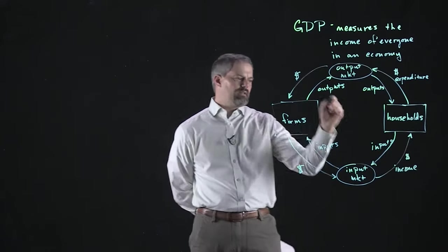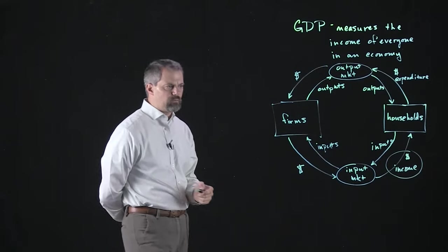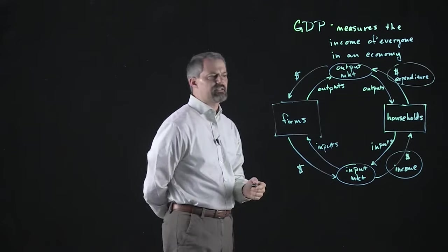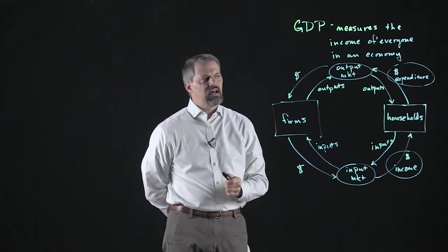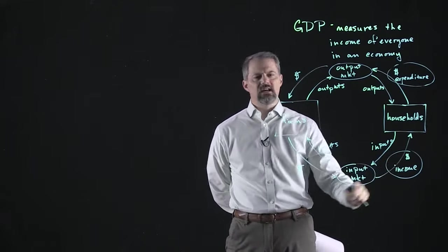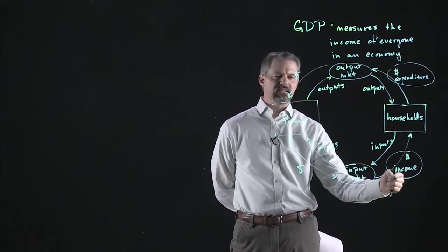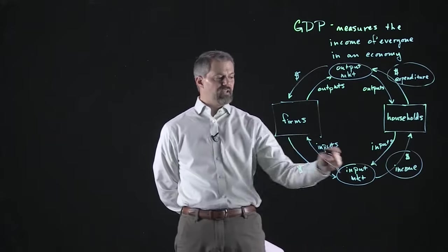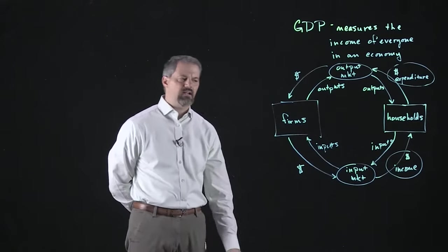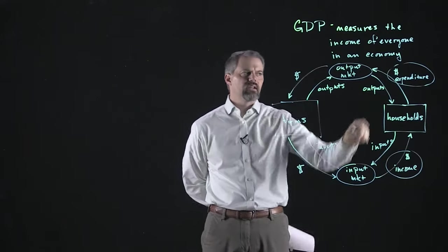So it's the same number of dollars flowing circularly. If we measure the dollars up here in the output market, we call it expenditure; if we measure it down in the input market, we call it income. We can measure GDP either way. The natural way is to measure the income of all households, but the number of dollars there equals the number up here. It turns out it's a bit easier to measure expenditure, partly because households have an incentive to under-report income since they get taxed on it. So we're going to focus on measuring it via expenditure.